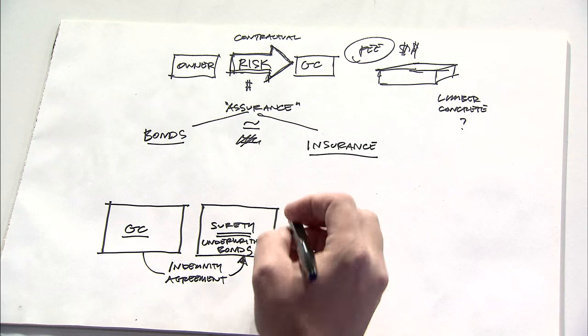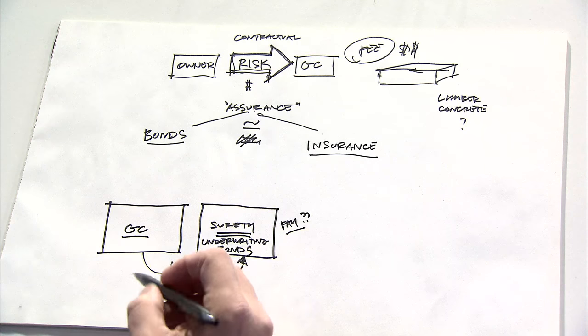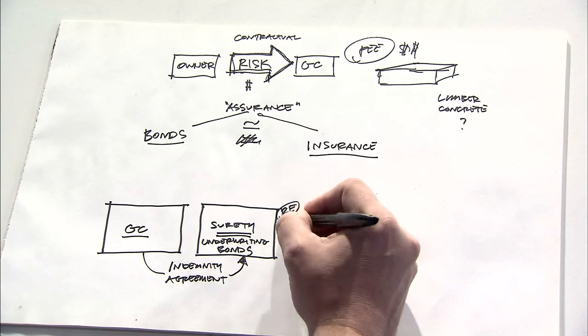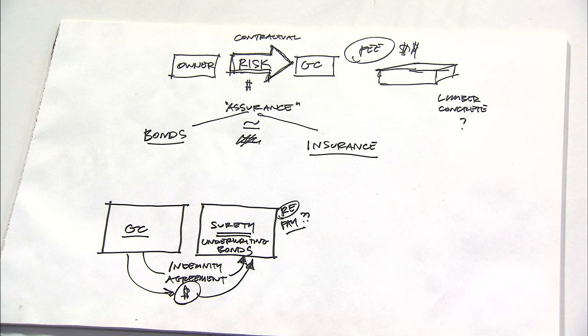And then what the general contractor obligates is that if the surety has to pay on behalf of the contractor, then the general contractor agrees that he would repay that amount of money to the surety. Now, this sounds like there's not a lot of risk in the bonding business, but as we'll see, this is actually not the case.